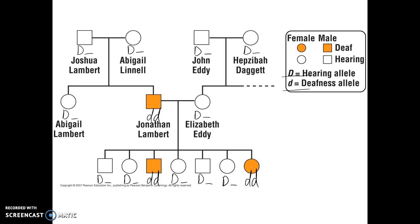Let's see if there's any other information we can fill in for these other individuals. When we look at Jonathan's parents, we know that Jonathan received a little d from both parents. So we can say with certainty that both Joshua and Abigail were heterozygous for this particular form of deafness — they were carriers for this genetic disorder. Also, when we look at Jonathan and Elizabeth's kids, some of those kids are homozygous recessive. We know Jonathan will always give a little d allele to his kids, but for those children who are deaf, they also had to have received a little d allele from their mother. In fact, all of the kids have at least one little d allele.